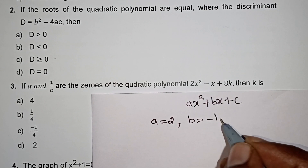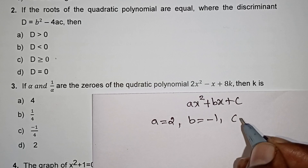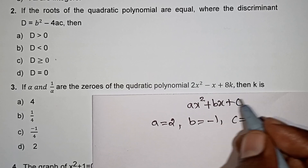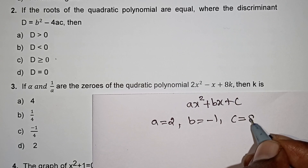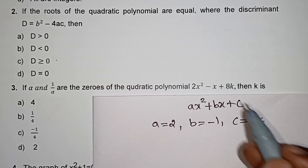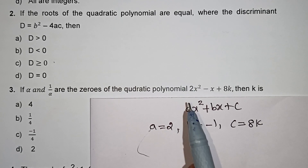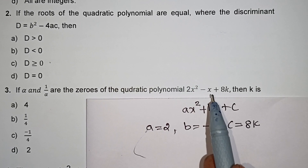B is equal to minus 1. C is equal to 8k.